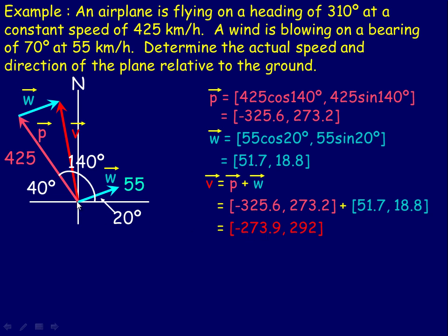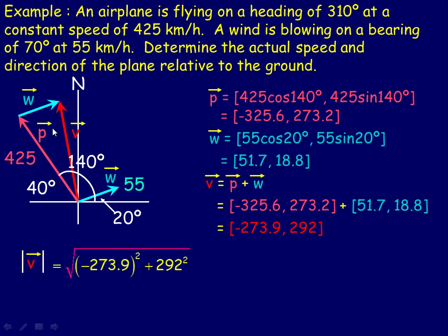The negative 273.9 is the horizontal component and 292 is the distance up — it's in the second quadrant. If we want to find out how long that resultant vector is, we use the Pythagorean theorem: the length equals the square root of the x-component squared plus the y-component squared, because this forms a right triangle with the negative 273.9 side and the vertical 292 side. Evaluating, we get the length of that vector is 400 kilometers per hour — which matches exactly what we got in the previous example using cosine law and sine law.